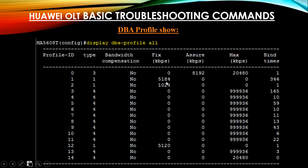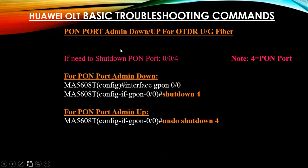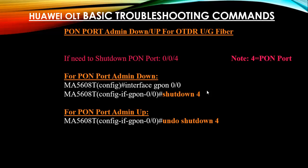Run: display dba-profile all — by this command you can see all DBA profile configurations. There are five types of DBA, which you can study from your documentation. Another command: if you want to shut down your PON port, go to interface mode and run shutdown 4, where 4 is your PON port. To bring it admin up again, run undo shutdown 4. Use this command when you need to OTDR test your underground fiber or splitter on the upstream fiber.